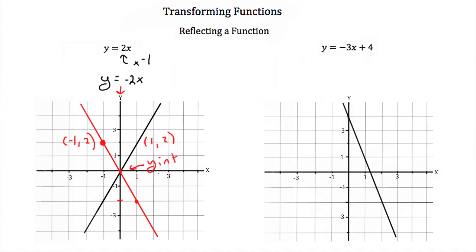Let's try the next one. Here we have y is equal to negative 3x plus 4. If we reflect it, we take our slope, negative 3, and multiply it by negative 1, giving us a slope of 3. So we end up with y is equal to 3x plus 4.